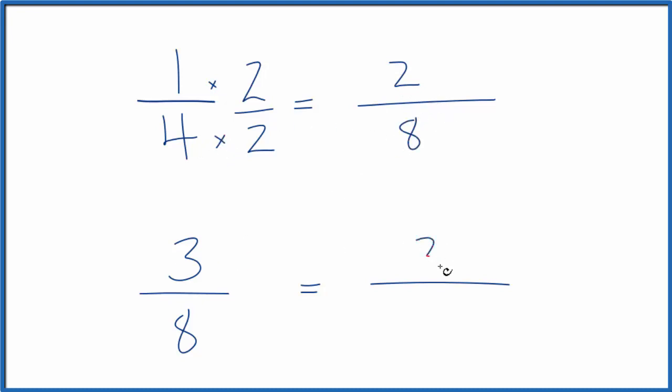So now we have 3/8 here and 2/8 here. The denominator is the same. Now we compare the numerators. We can see that 3/8 here is larger than 2/8. So 3/8 is larger than 1/4, since 1/4 and 2/8 are the same number.